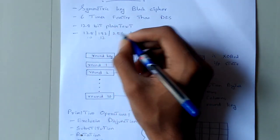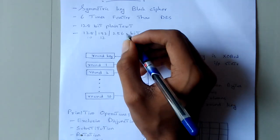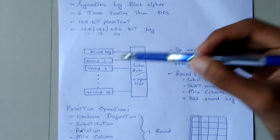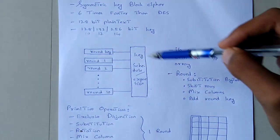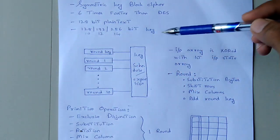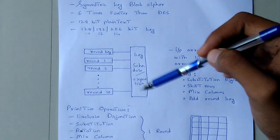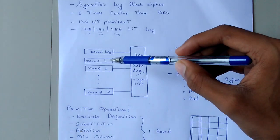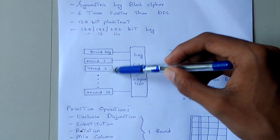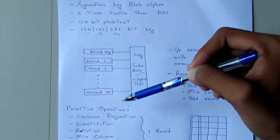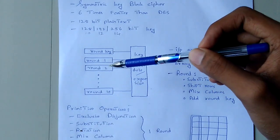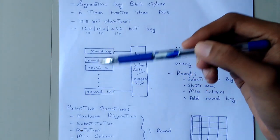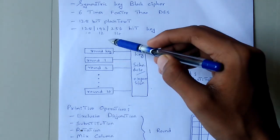And when we use a 256-bit key, the number of rounds is 14. So the basic structure with a 128-bit key has 10 rounds, plus one extra initial round.